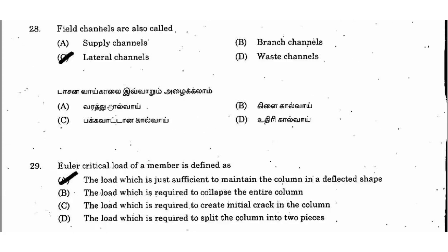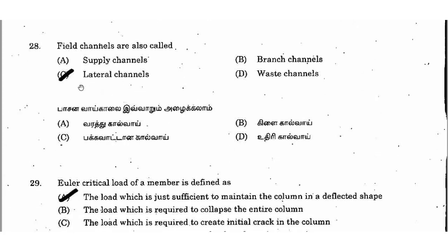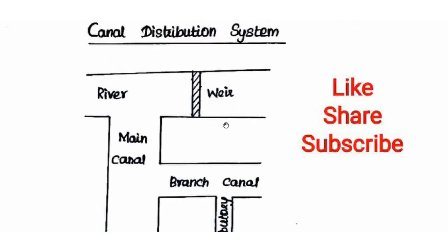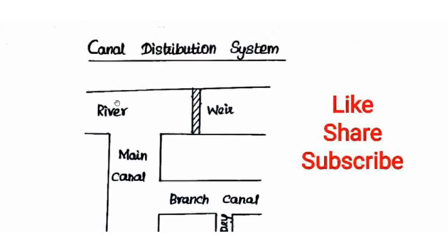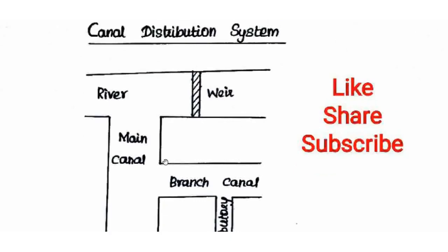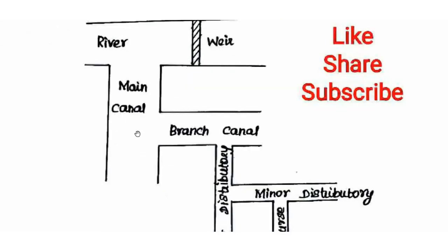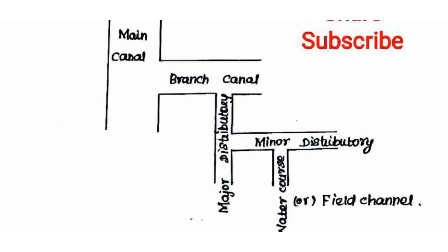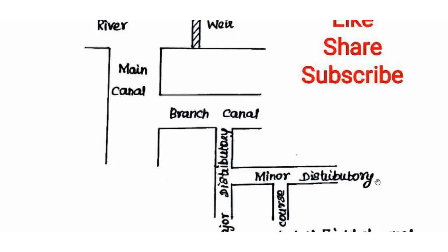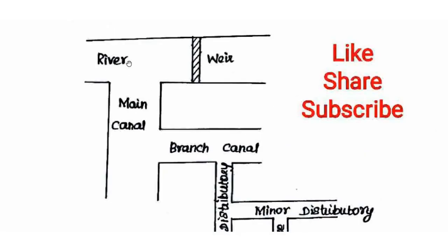Field channels are also called lateral channels — right answer option C. In the canal distribution system, the hierarchy is: Main Channel, Branch Channel, Major Distributory, Minor Distributory, and Field Channel or Watercourse. So field channels are also known as lateral channels.